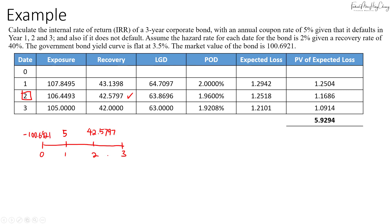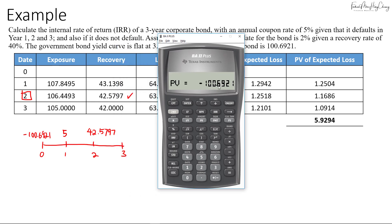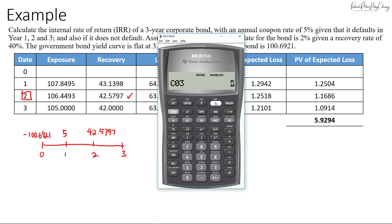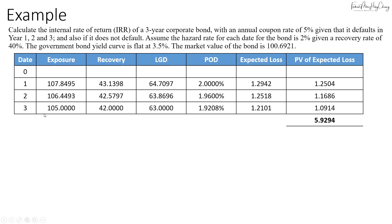Using the cash flow worksheet on the calculator, CFO is negative one hundred point six nine two one. CF1 is five and CF2 is forty-two point five seven nine seven. Making sure there are no other cash flows, proceed to IRR and compute. You get negative thirty-two point four four percent. So the IRR is negative thirty-two point four four percent if the bond defaults in year two.